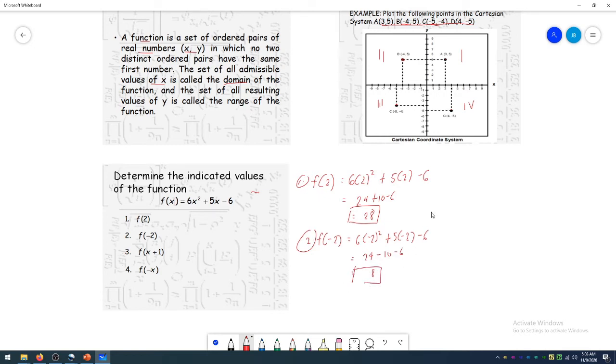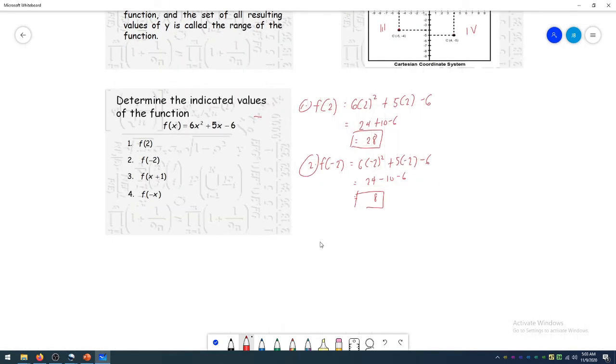For number 3, it's a bit different because the value that is needed would be f(x + 1). Therefore, you change all the values of x into x + 1. So that's 6 times (x + 1)². Change x to x + 1, then plus 5 times (x + 1) minus 6. Expand (x + 1)². That's 6 times (x² + 2x + 1), plus 5x + 5 minus 6. Combine all like terms. But before we combine that, let's distribute first.